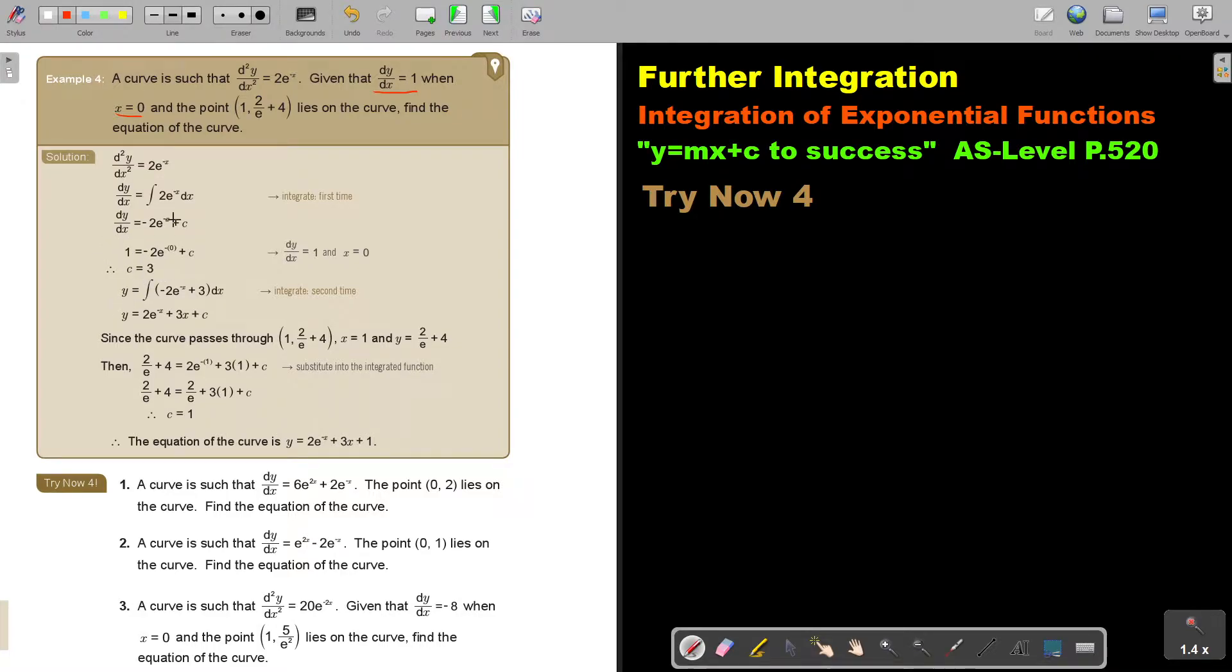Now, to get the y, to get the original equation, I integrate again. So if I integrate again, remember that negative x, so it's positive 2e^(-x), plus 3x, plus c. So now I'm going to substitute this point.